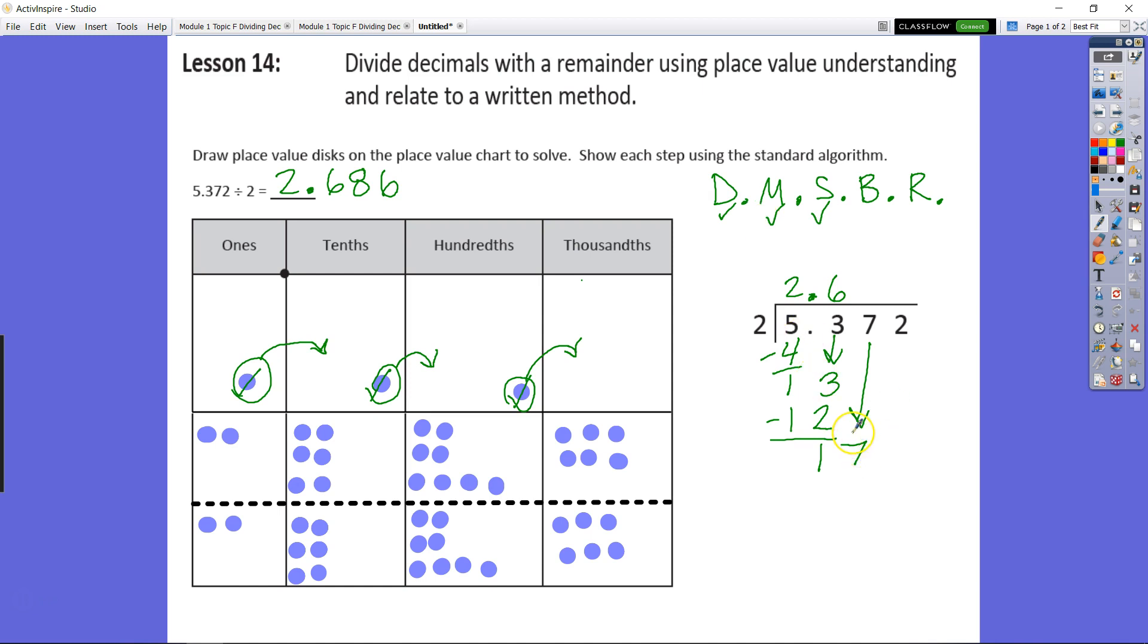Seventeen divided by two is eight. Eight times two is sixteen. Subtract: seventeen minus sixteen is one. Bring down to get twelve. Dividing twelve by two gives six in each group. You can see how this division directly relates to what we did on our place value chart.